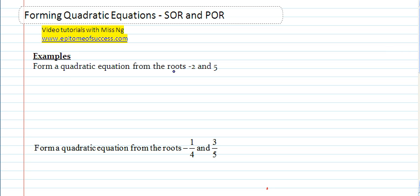Now recall that when the roots is negative 2 and 5, means x is equal to negative 2 and x is equal to 5. So now what you need to do is just to reverse this. x is equal to negative 2, so you shift the negative 2 over, it becomes x plus 2 and this becomes x minus 5 equals to 0.